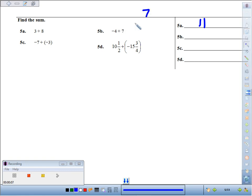5b, negative 4 plus 7, take big minus small, which is 3. And the bigger number wins. Since 7's bigger and it's positive, our final answer's positive.